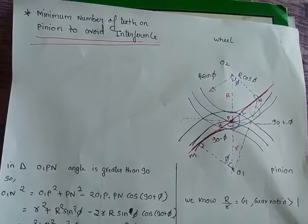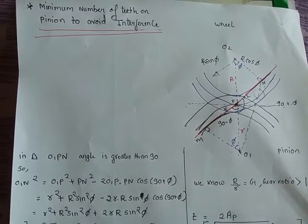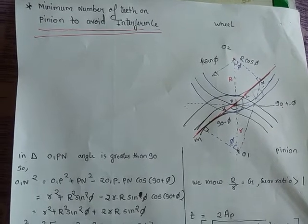So now today we are going to discuss the derivation of minimum number of teeth on the pinion to avoid the interference.